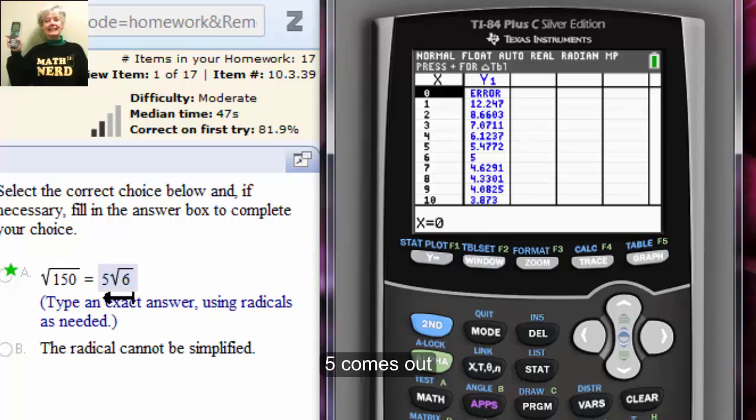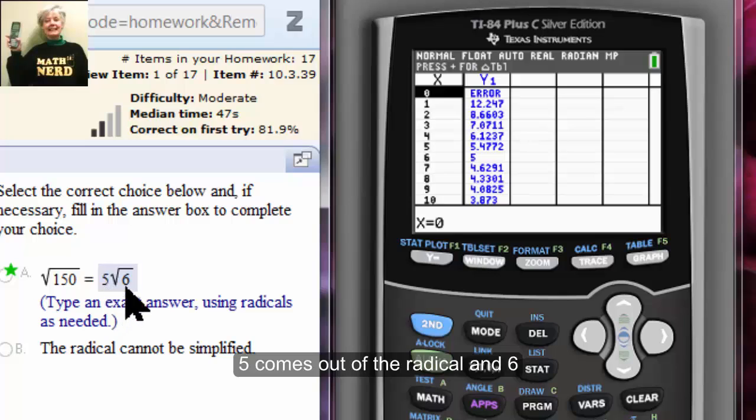So 5 comes out of the radical and 6 stays in. And that's the whole story.